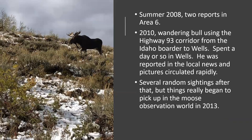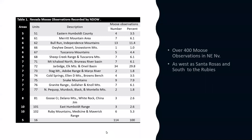Then more sightings: summer of 2008, two reports in Area 6. In 2010, a wandering bull actually made the headlines in the local newspaper — he used the corridor of Highway 93 between the Idaho border all the way to Wells, Nevada, spending a couple of days in Wells and being reported on local news. Several sightings were noted after that, but the sightings and observations really picked up in 2013. Over 400 moose observations were recorded in northeastern Nevada between 2013 and 2018 — 59 bulls (29 young and 30 mature), 61 cows, and 10 calves. While some of these may be the same animal being seen multiple times, it's still evident that moose observations in the area are increasing.